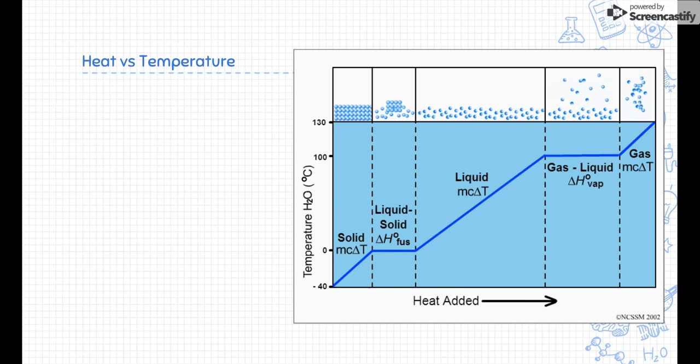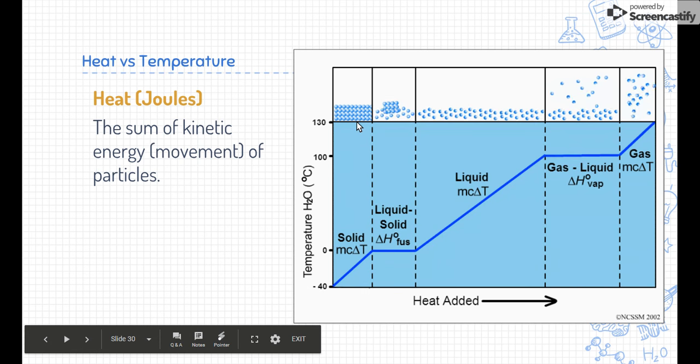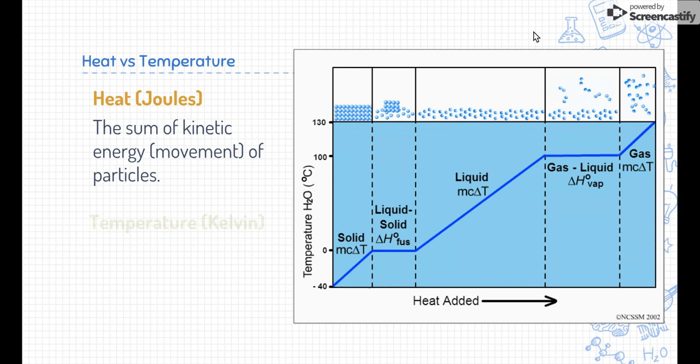Before we get going, we've got to talk about the difference between heat and temperature. Some people kind of confuse the two. Heat is in joules. That's the energy itself. So heat is the sum of all the movement or the kinetic energy of the particles. Take a look at this picture of this graph over here at the very top. You can see how the particles, when you add heat, start moving faster and faster and faster. And we measure heat in joules.